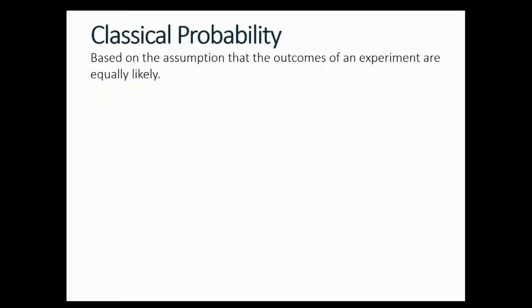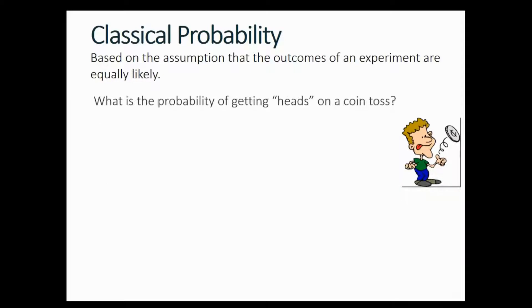Classical probability is based on the assumption that the outcomes of an experiment are equally likely. For example, what is the probability of getting heads on a coin toss? When you toss a coin you have heads or tails — those are the only two choices. If we're looking for heads only, we have one head out of a total of two different outcomes.